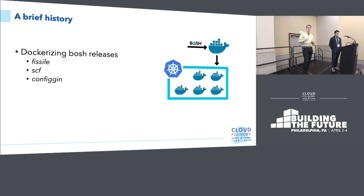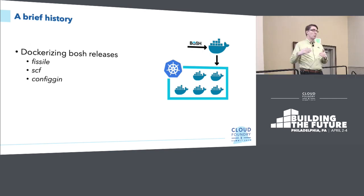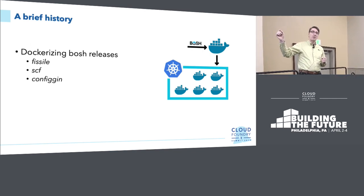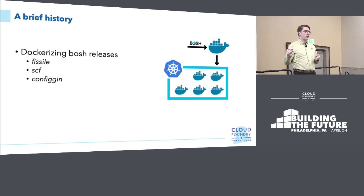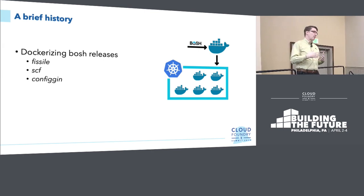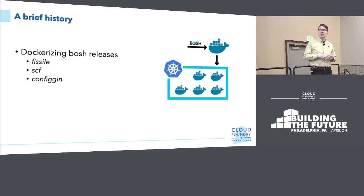SCF is a repo that contains the results of things that go through Fissile and ConfigGen. Fissile creates the Docker images, ConfigGen creates the config for Kube, and SCF is the repository that ties all that stuff together — short for SUSE Cloud Foundry.